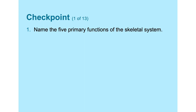The checkpoint slide at the end of Module 6.1 asks only one question: name the five primary functions of the skeletal system. Beyond merely listing the five functions, a deeper question is which structures of the skeletal system perform these functions, and how, or in what way, do they carry out these functions — both of which we have answered in Module 6.1. Join me next in Module 6.2 as we discuss the classification of bones by their shape and structure.